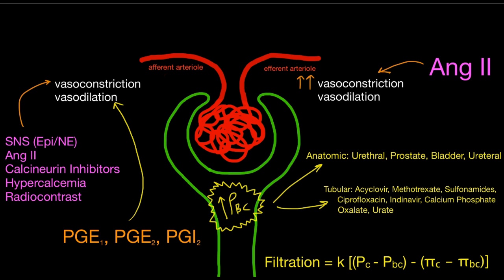Tubular obstruction within the kidney is also possible. Drugs such as acyclovir, methotrexate, sulfonamides, ciprofloxacin, and indinavir — an old protease inhibitor — can do this. Components that cause nephrolithiasis, such as calcium phosphate crystals, oxalate crystals, and urate crystals as seen in tumor lysis syndrome, can also crystallize within tubules and cause tubular obstruction, impairing GFR. Consider this entire differential when working up a patient with acute kidney injury.